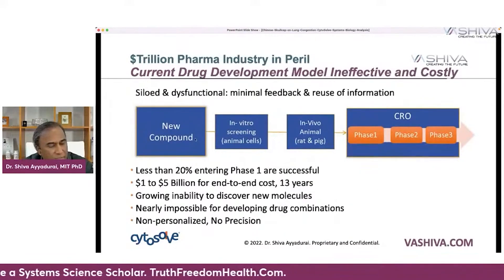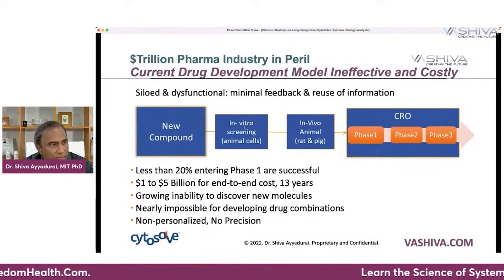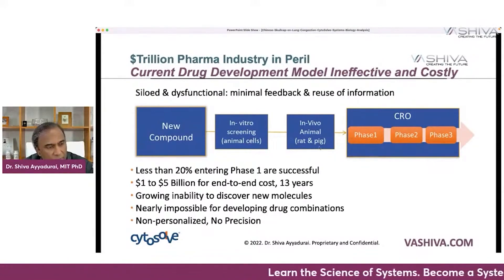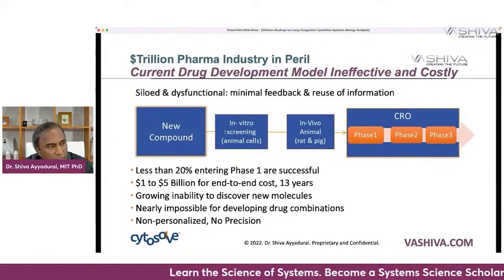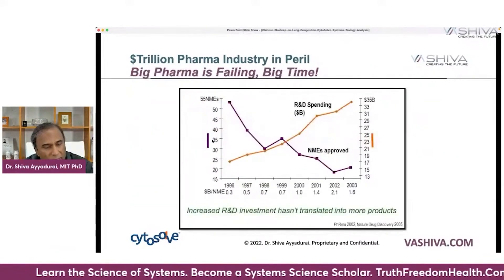Cytosol lets us move past the very medieval process of drug development, where they handle a single compound, do stuff in a test tube, kill animals, then do human testing. With Cytosol, we start way before this and do modeling much earlier.